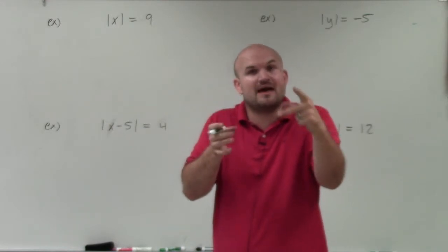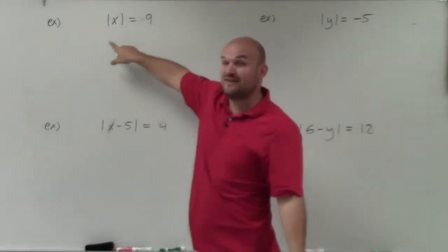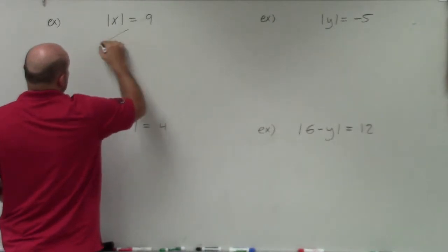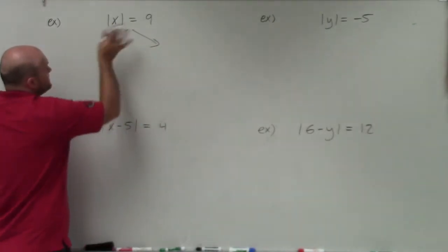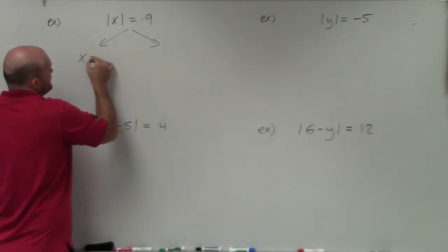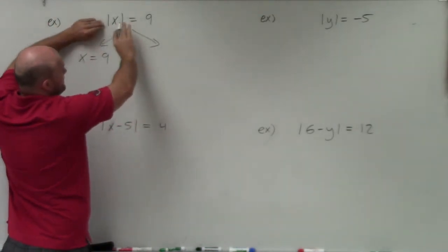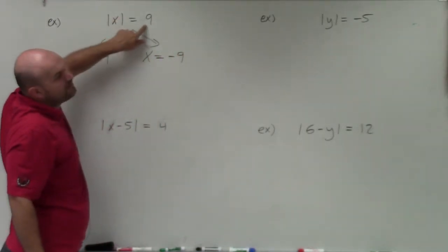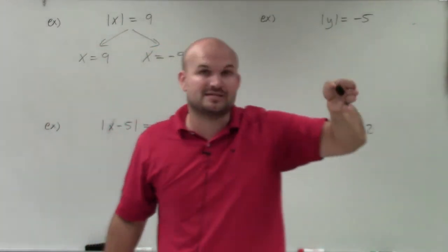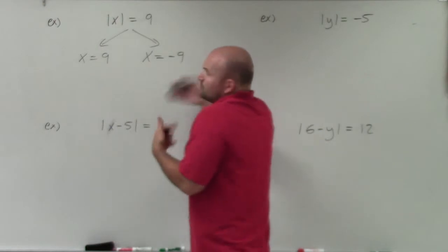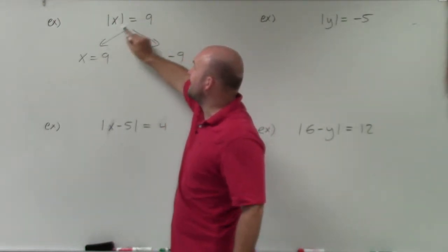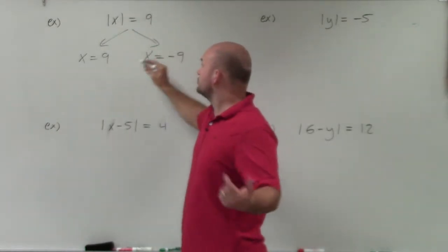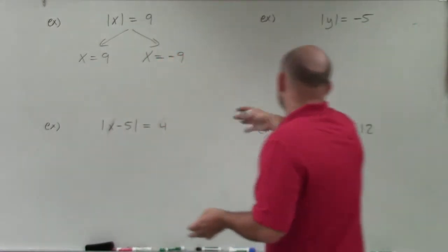So if I say the absolute value of a number is equal to 9, there's two possibilities. So we've got to make sure we test both of them. So to do that, what we're going to do is basically take the positive and the negative. So we say x is equal to 9. You basically rewrite the equation without the absolute value symbols. And then you take it and you negate the other side, make it negative. Now let's see, does this work? You can plug them back in. If x is equal to 9, the absolute value of 9 is 9. Absolute value of negative 9 is still 9. So those are your two solutions. So you're going to create a positive and a negative.